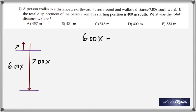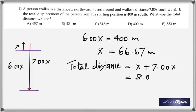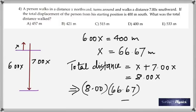6x = 400, therefore x = 400 ÷ 6 = 66.67 meters. The total distance is 8x, because you measure all the way: x plus 7x. Since x is 66.67, multiply by 8 — with only 3 significant figures — to get a total distance of 533 meters.